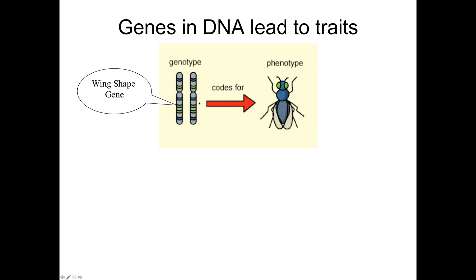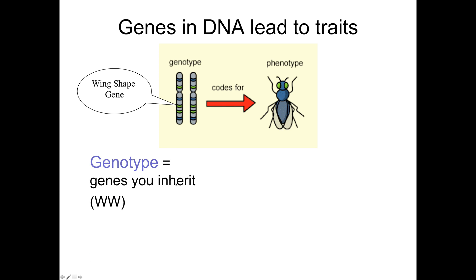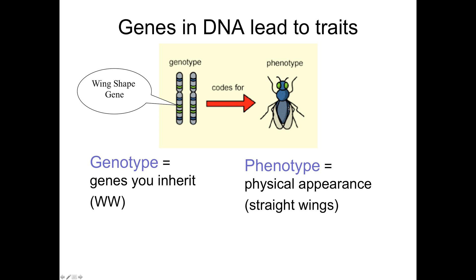On your chromosomes you actually have a pair of them — one from mom and one from dad. We're going to look at the gene for wing shape. Flies have been experimented on quite a bit in the lab, and they can either have straight wings or wrinkled wings. Your genotype is the pair of genes that you inherit. This fly's genotype is homozygous dominant — two pairs of dominant alleles, homozygous meaning they're both the same. The genotype leads to the phenotype, its physical appearance, so the fact that this fly has straight wings is its phenotype, determined by the pair of genes it inherited.